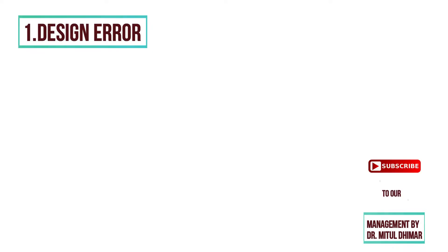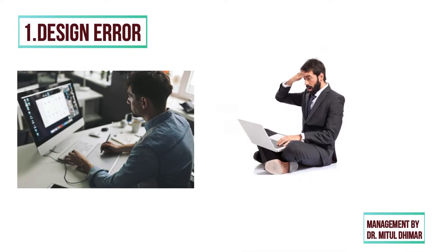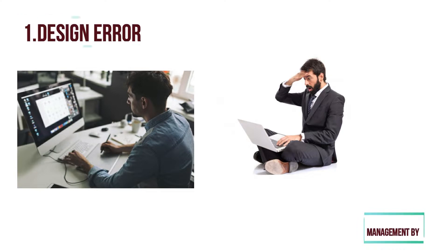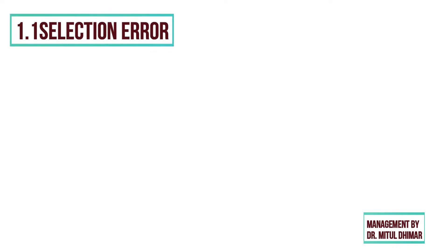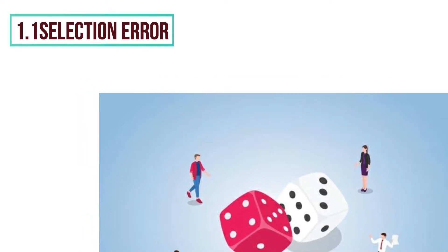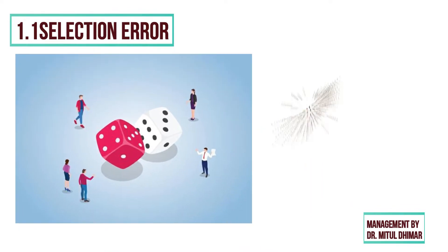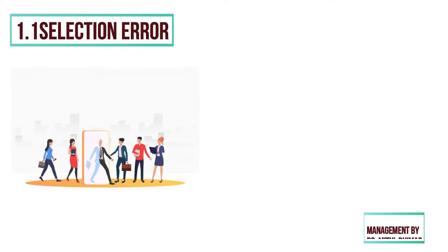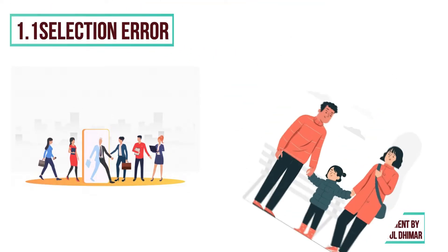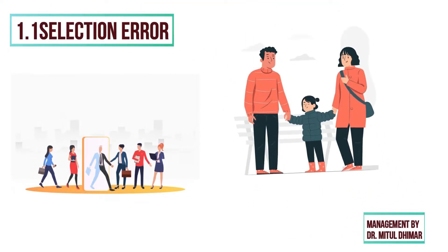Number 1: design error. When we are designing research, the researcher can make many mistakes. The design errors made by researchers are: Number 1 — selection error. It occurs when a sample obtained from a non-probability sample is not representative of the population. For example, if a mall interviewer avoids interviewing people with children, he is introducing a selection error.